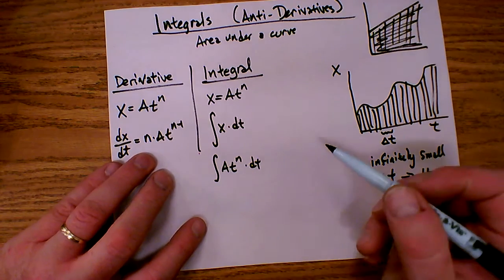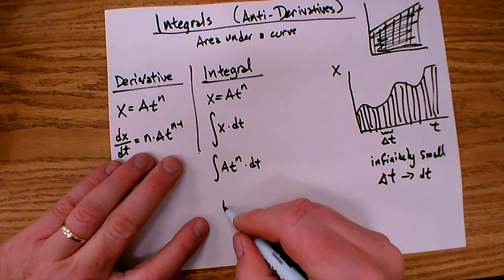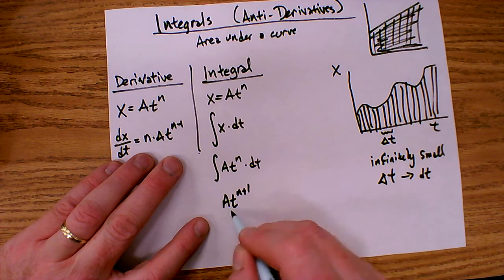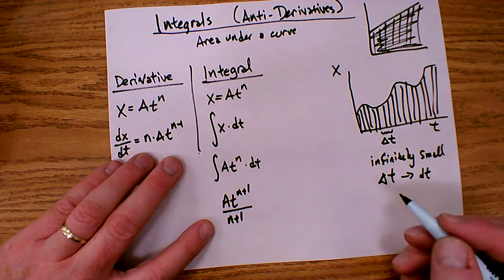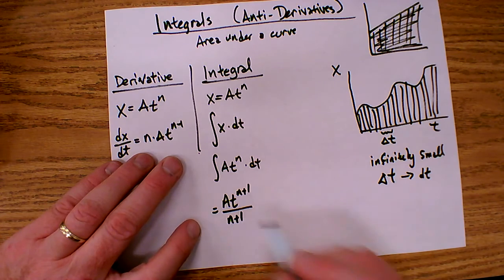So taking those steps exactly in reverse, I'm going to increase the exponent by 1 and then I'm going to divide by the new exponent. So if I do that, that is how I do an integral.